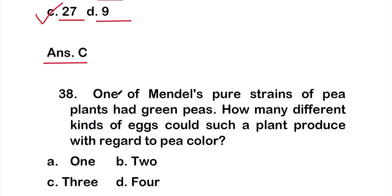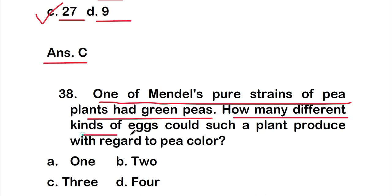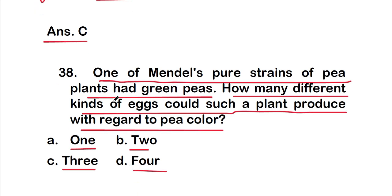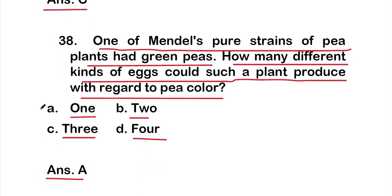Question 38: One of Mendel's pure-strain pea plants had green peas. How many different kinds of eggs could such a plant produce with regard to pea color? Options are 1, 2, 3, or 4. The right answer is option A — only 1 kind of egg, since it is a pure (homozygous) strain.